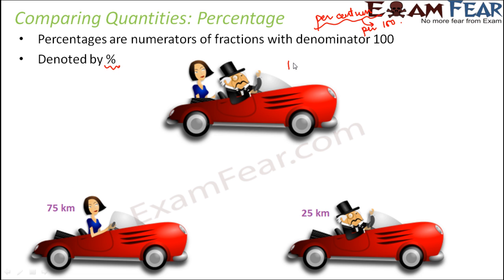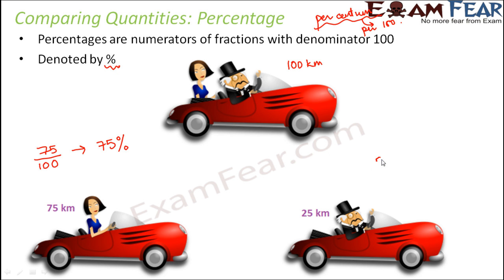So when I say percentage, that means out of 100, how much distance was covered by Mrs. Smith? The total distance in this case is 100 kilometers. Mrs. Smith covered 75 kilometers out of 100 kilometers, so this 75 by 100 is nothing but a percentage. Instead of writing it like this, we represent it as 75 percent. So 75 percent actually means 75 out of 100.